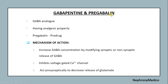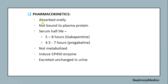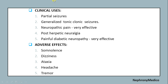Gabapentin and pregabalin are GABA analogs having analgesic properties; pregabalin is the prototype. Mechanism of action includes increasing GABA concentration by modifying synaptic or non-synaptic release of GABA, inhibiting voltage-gated calcium channels, and acting presynaptically to decrease release of glutamate. Pharmacokinetics: absorbed orally and excreted unchanged in urine. Clinical uses include partial seizures and generalized tonic-clonic seizures. Adverse effects include somnolence, dizziness, ataxia, headache, and tremor.